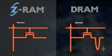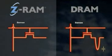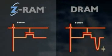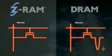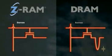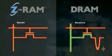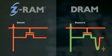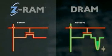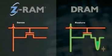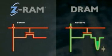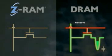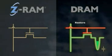At the end of the sense operation, the DRAM capacitor is discharged — its memory state has been lost. Before the read operation can end, the voltage on the bit line must be raised to restore the charge on the capacitor. Reading a Z-RAM memory cell is non-destructive. After the state of the memory cell has been detected, the transistor can be turned off and the read operation is over. The next memory operation can begin immediately.